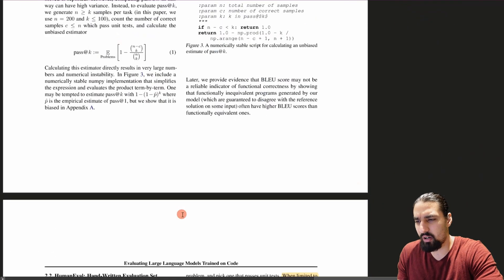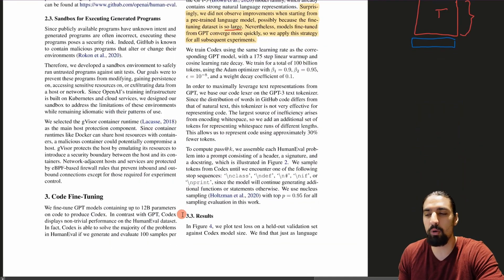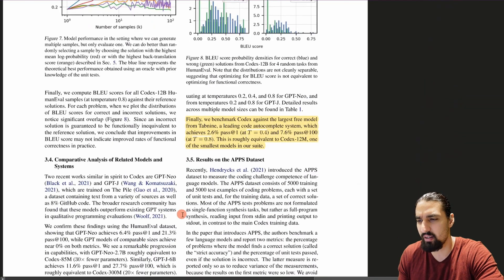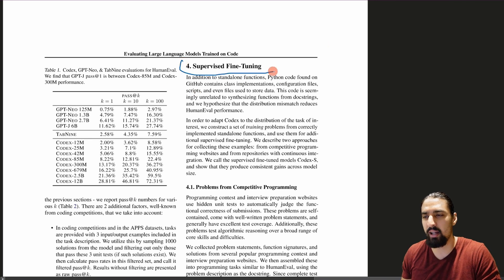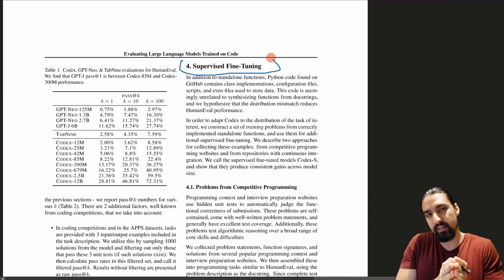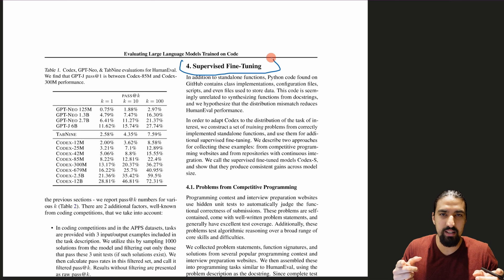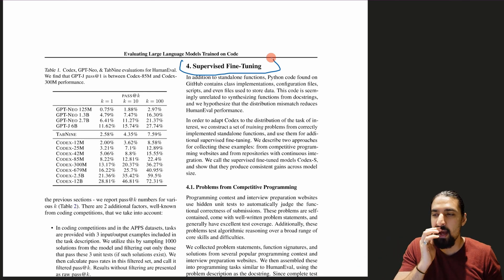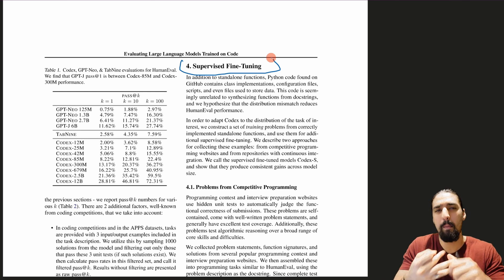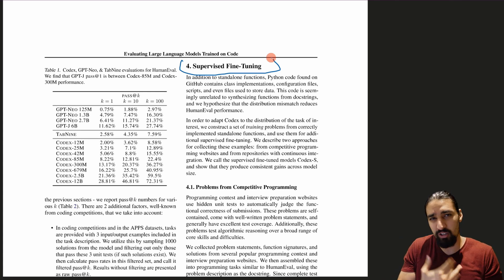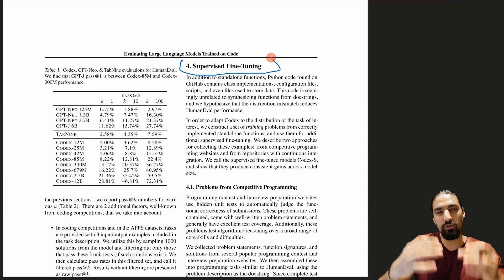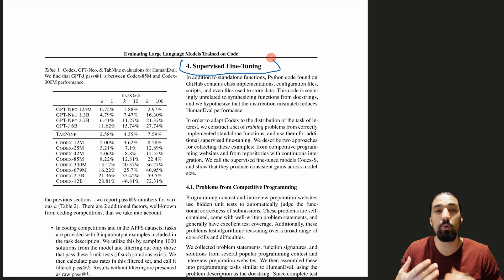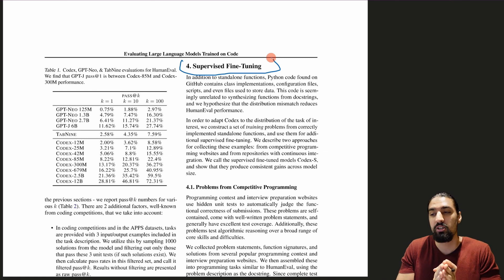They also fine-tuned on datasets of higher quality — specifically code from competitive programming websites, which is higher quality than random GitHub scrapes. They also found repos with continuous integration, extracted functions, and used those as training examples. This created the Codex-S family of models, which performs even better on the pass@k metric. GitHub Copilot likely uses some combination of these techniques.